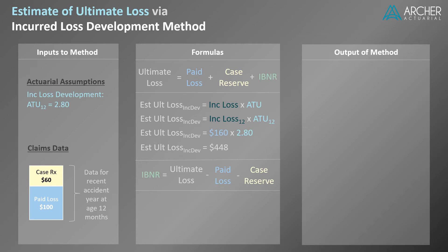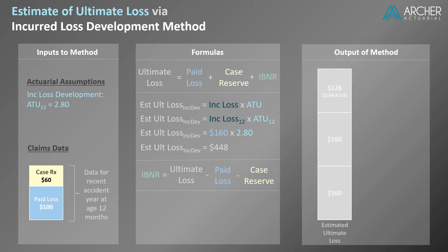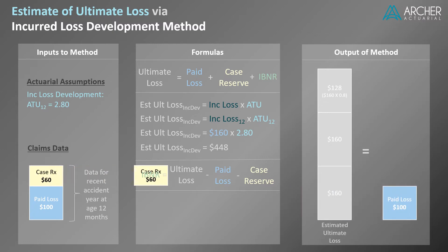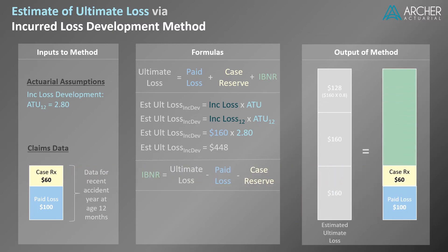Graphically, the method looks like this. As before, we'll break the ultimate loss into its components: paid loss, case reserves, and IBNR. Using our formula for IBNR, we calculate an amount of $288.